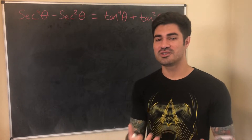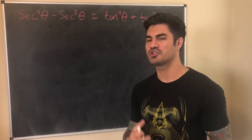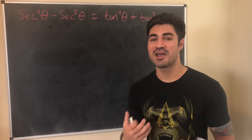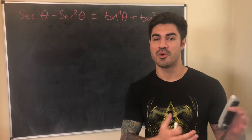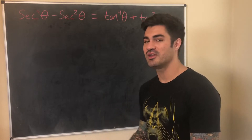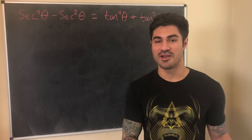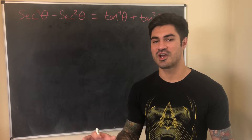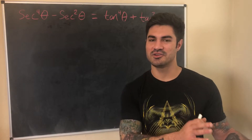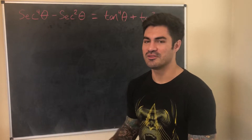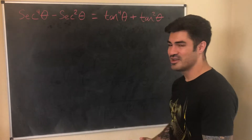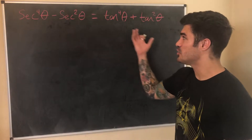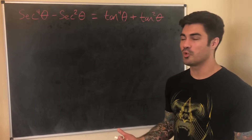As a general tip, I like to pick the side that looks more complicated, because from my experience it's a lot easier to go from more complicated to less complicated than the other way around. Both sides always work, but sometimes one is a little easier. In this first example both sides are equally complicated, so I'll work with the right side.